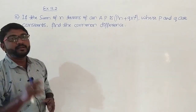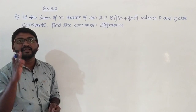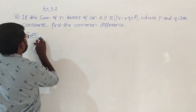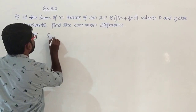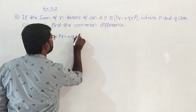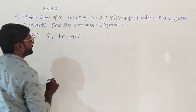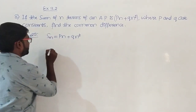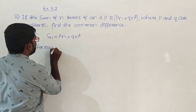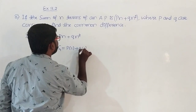He has given Sn and we will have to find the value of d. In order to find d, we first calculate a1 and a2. So here Sn equals pn plus qn square. Now go for n equal to 1. For n equal to 1, you get S1 which equals p into 1 plus q into 1 square.